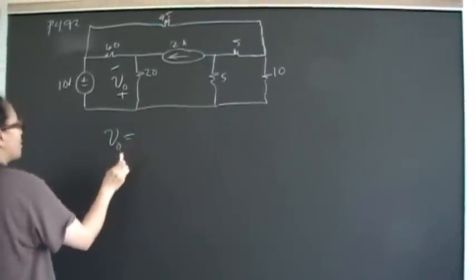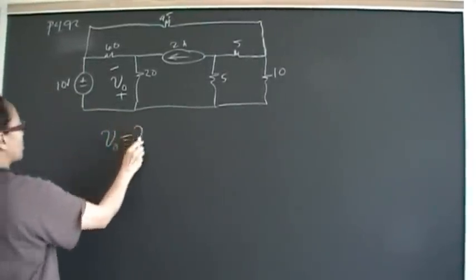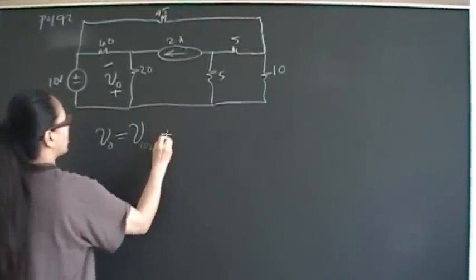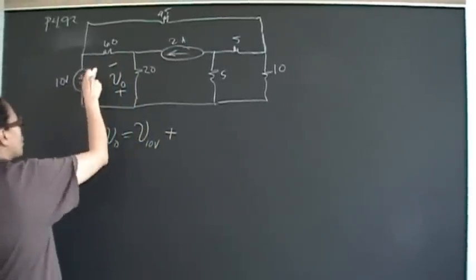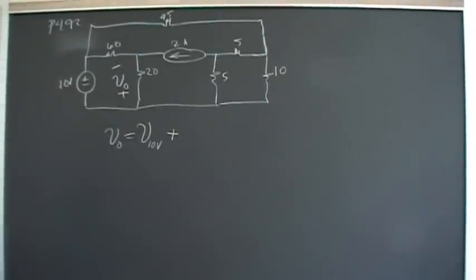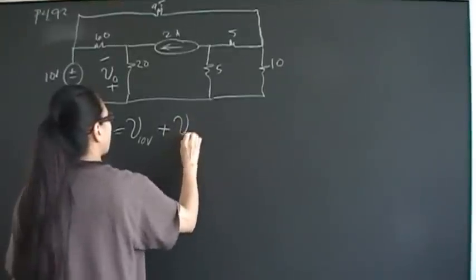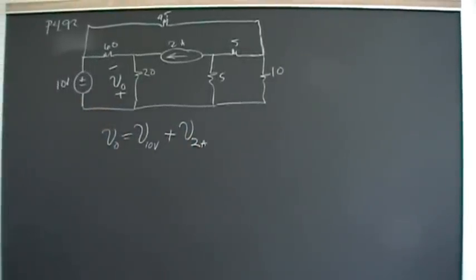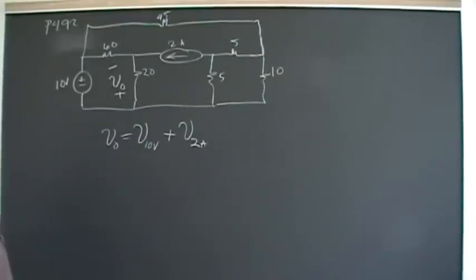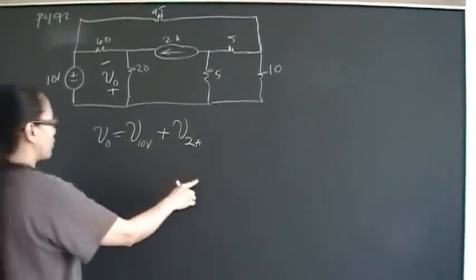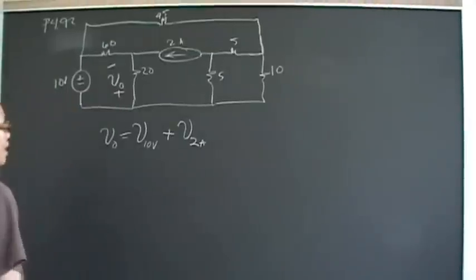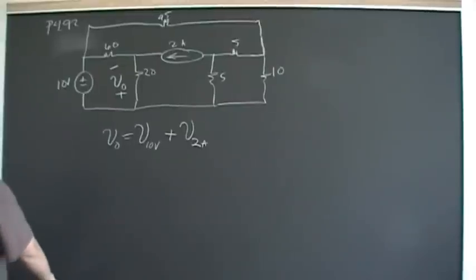then V-out is the sum of the effects of the 10-volt source plus the 2-amp source. We're going to look at just the 10-volt source, disable the current source by opening it, and then do the opposite — look at just the effects from the 2-amp source by shorting out the voltage source. Superposition is just one way to solve this problem, and sometimes it's the only way that works, so it's an important tool to have in your circuit toolbox.